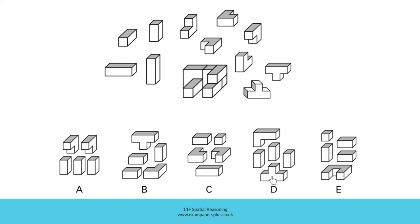In option D, we have the T-shaped block, which we know could fit towards the back. But then we have this longer L-shaped block. The T-shaped block can only be fitted into one position in the figure, and that would mean that this longer L-shaped block would not fit properly. This is a shorter L-shaped block, not a longer one like this. D can be eliminated.